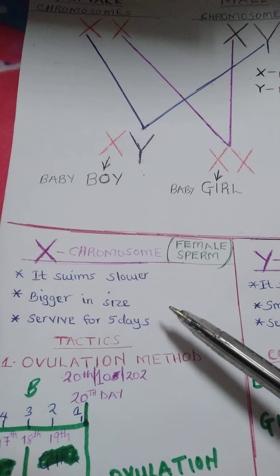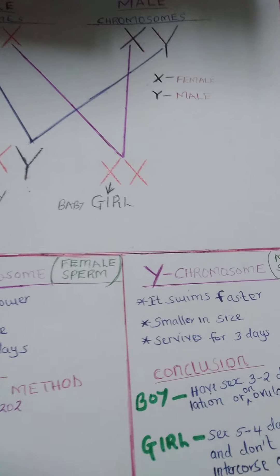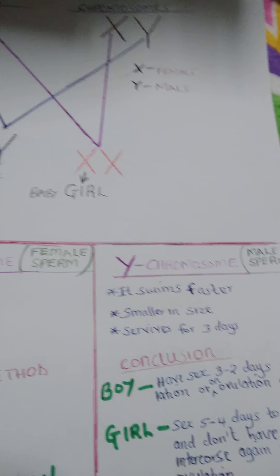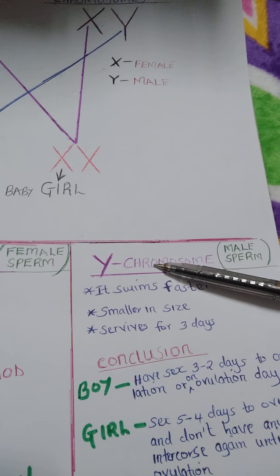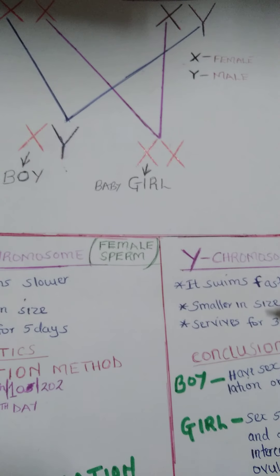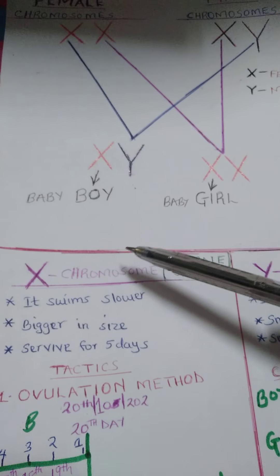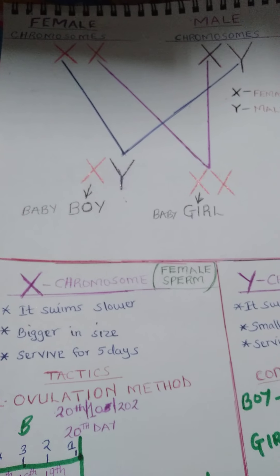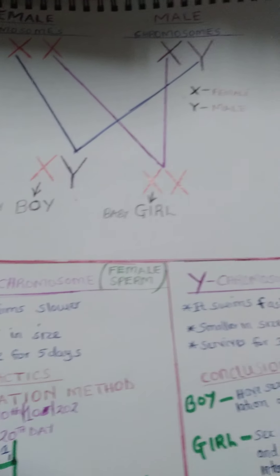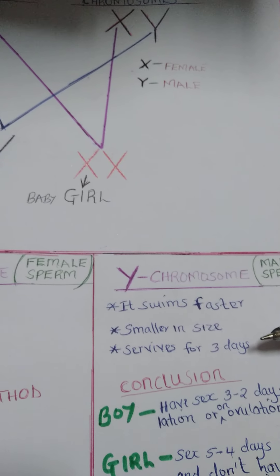Another characteristic: the X chromosome, or the female sperm, is bigger in size as compared to the Y or male sperm, which is smaller in size. That's why the male sperm swims faster than the X sperm — because X sperm is bigger and Y sperm is smaller in size. The third characteristic is that the X chromosome, or the female sperm, survives for five days, whereby the male sperm stays for only three days before it dies.